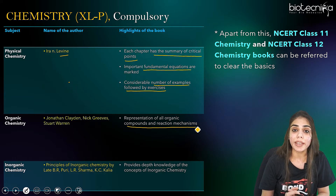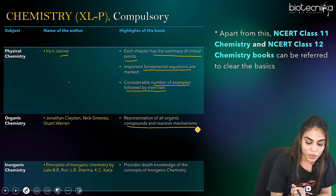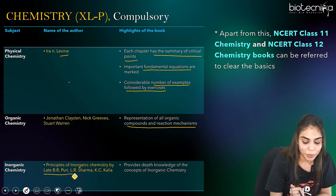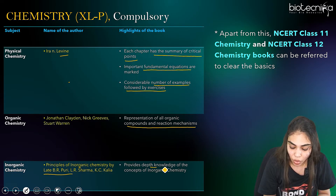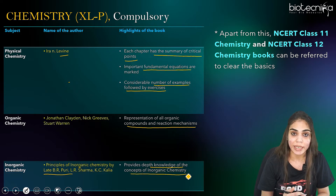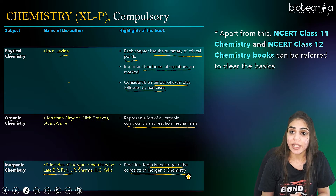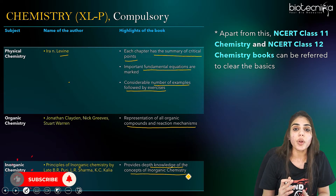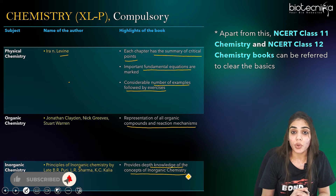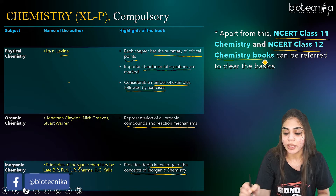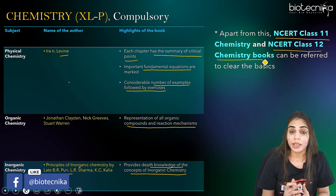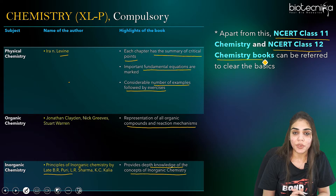For inorganic chemistry, you can go for Principles of Inorganic Chemistry by B.R. Puri. These are three different reference books for three different sections, and this book provides in-depth knowledge of inorganic chemistry concepts. Alternatively, you can go for NCERT class 11th and class 12th textbooks. If you don't want to refer all three books, NCERT class 11th and 12th chemistry will be a great help for the chemistry section of GATE Life Sciences exam.